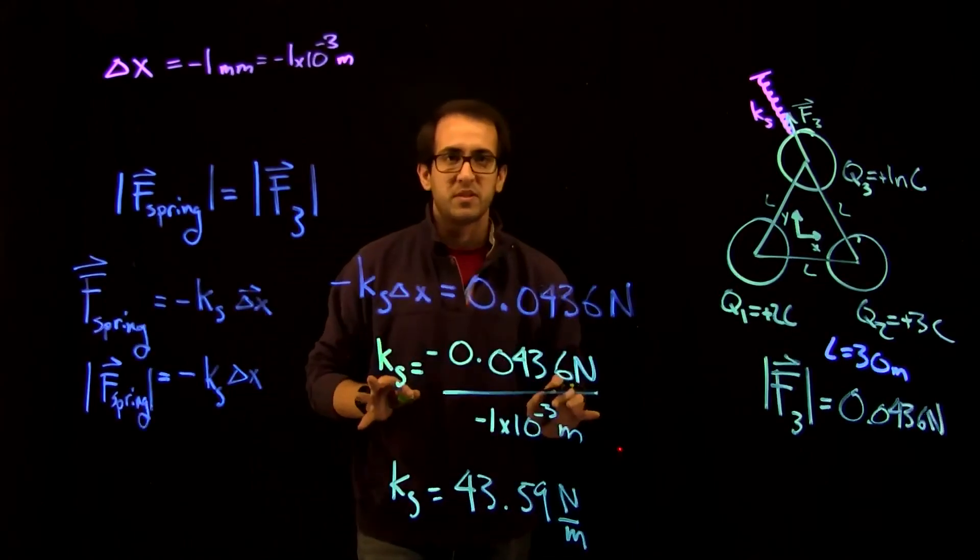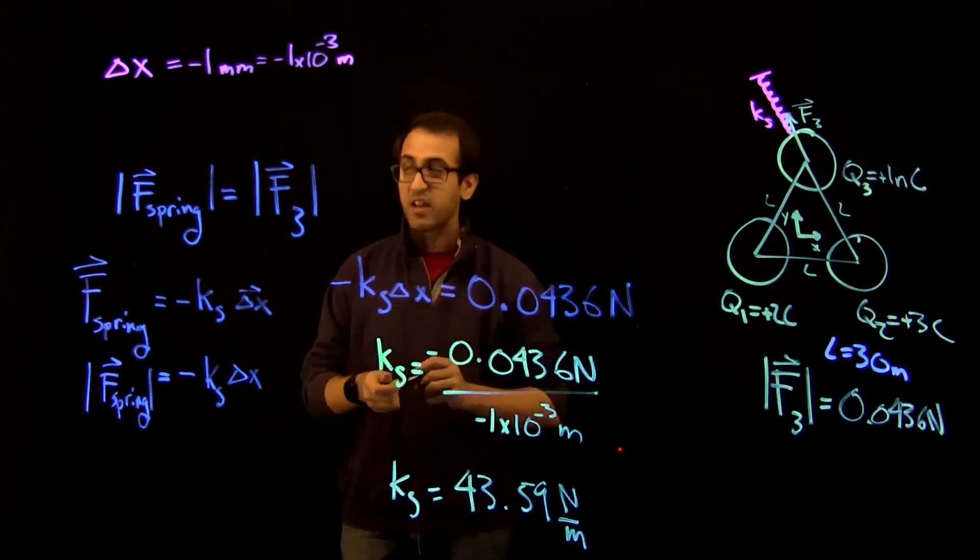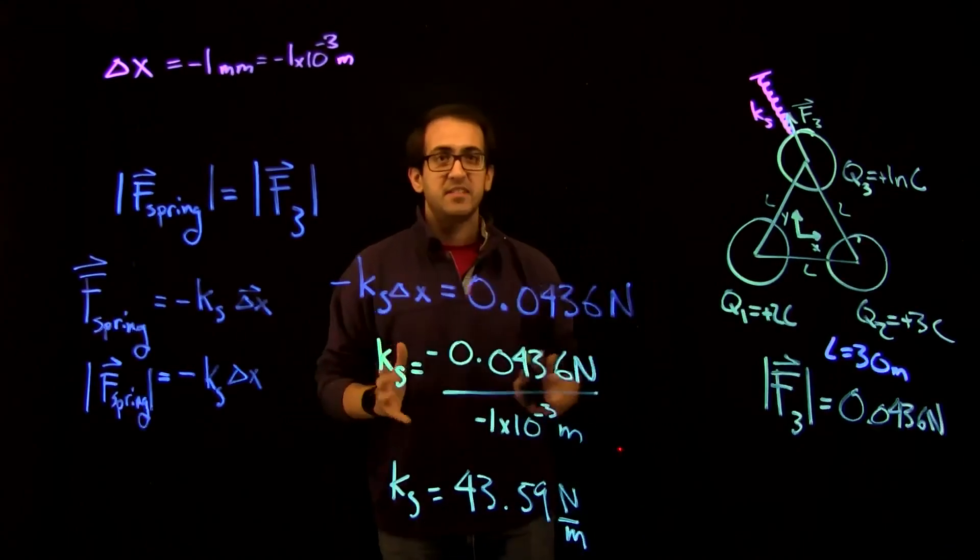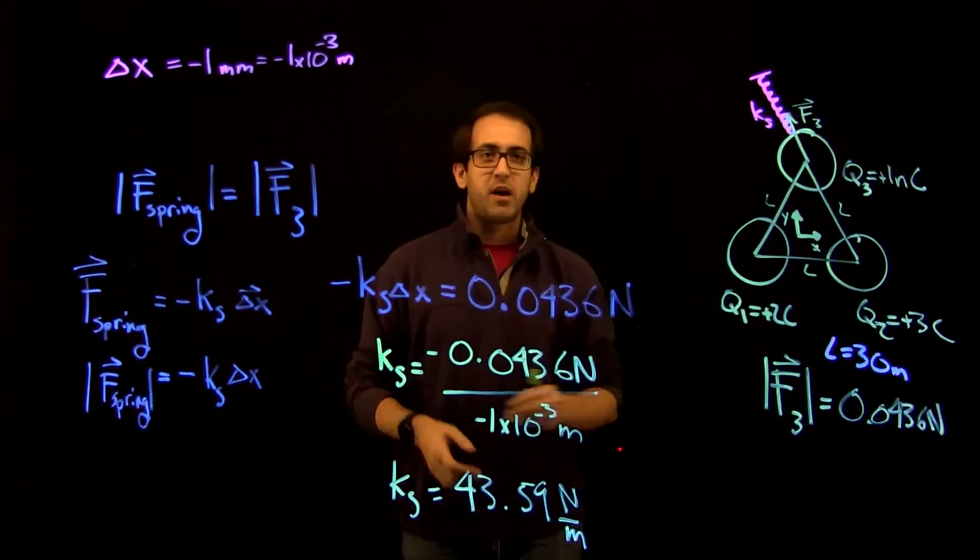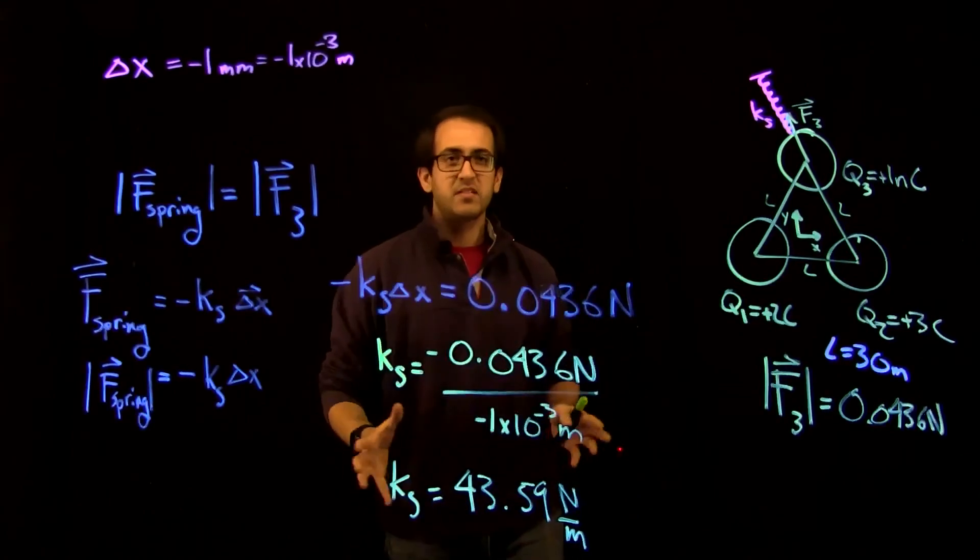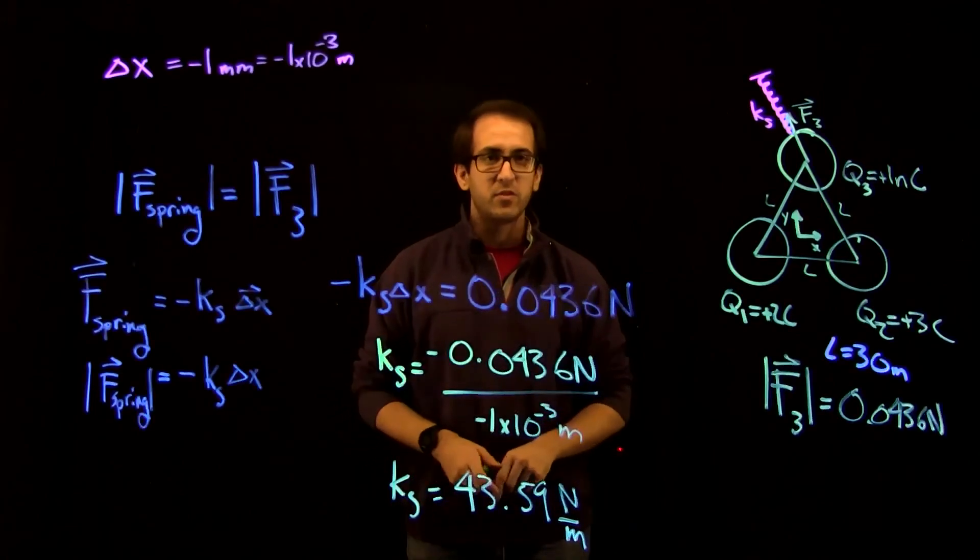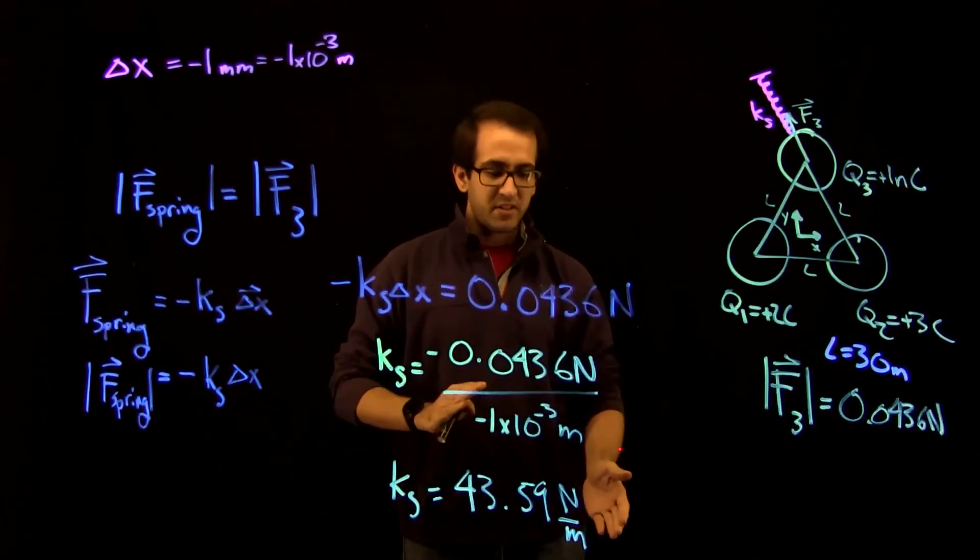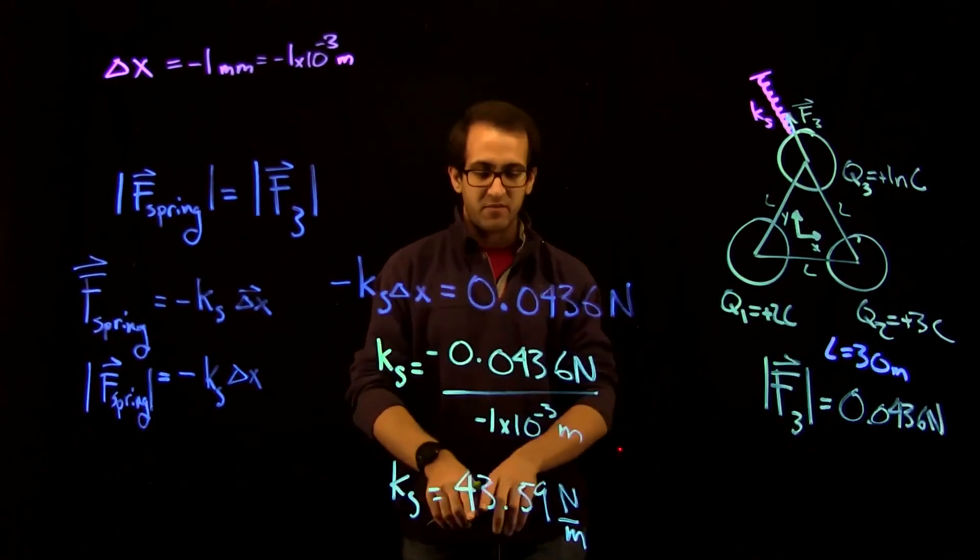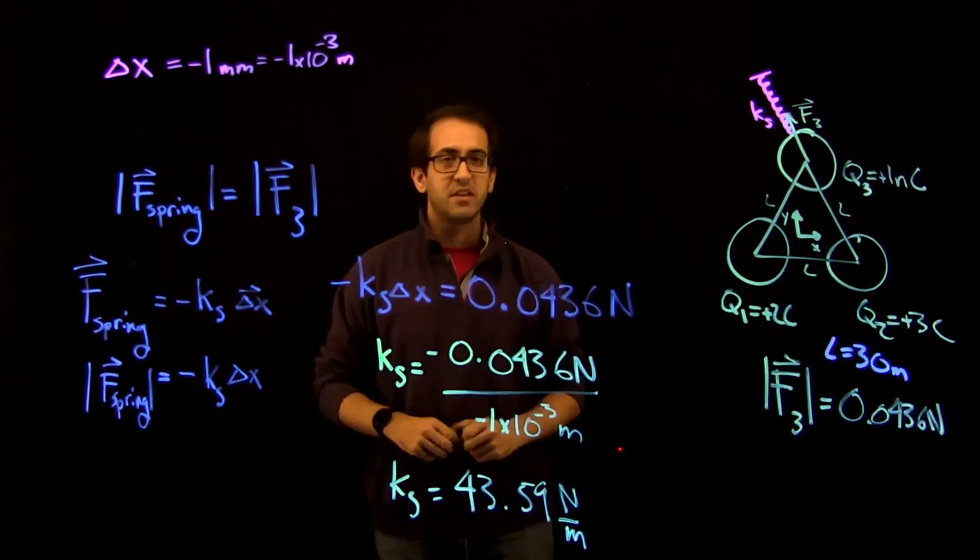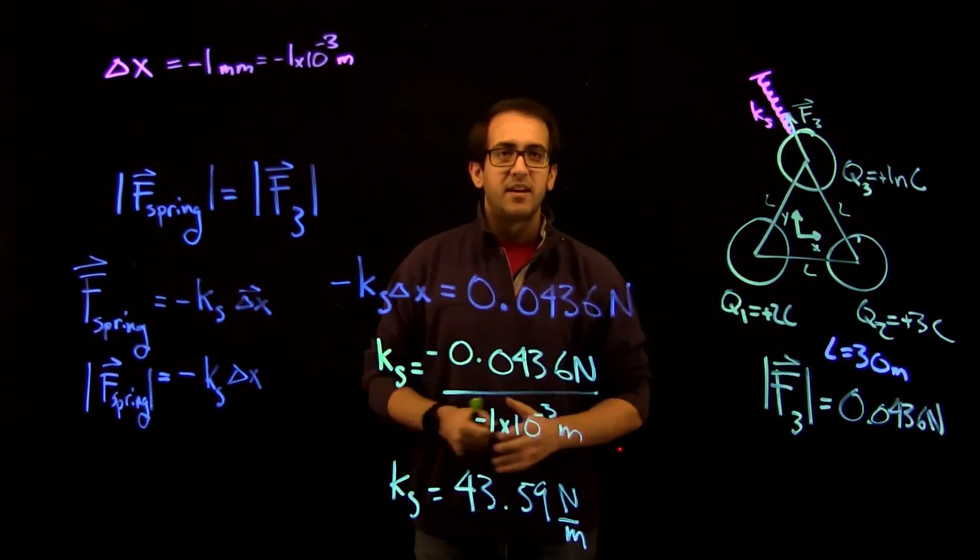And it's always useful to go through these problems and identify the units and carry the units throughout the entire problem. This is because it's an easy sanity check. At the end of your problem, does it make sense? So let's consider the units of the spring constant. Ks has units of newtons per meter. So for every meter that this is compressed, it will give you a force of 43.59 newtons. Makes sense. Our units check out. And we have our answer.